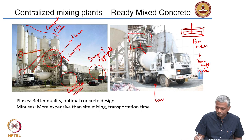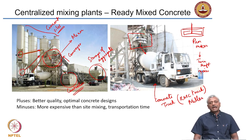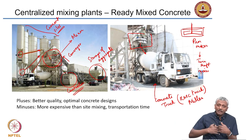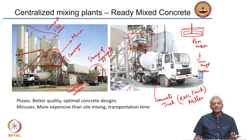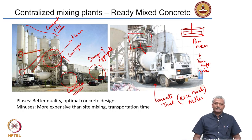That is called a concrete truck, sometimes referred to as an RMC truck. These trucks carry concrete from the central mixing plant to the job site. It does not mean the mixing plant is very far away — in very large job sites such as airport construction, you may set up a plant very close to the site itself, with trucks carrying concrete only a few hundred meters. Still, a truck is a good way to carry a large volume of concrete.